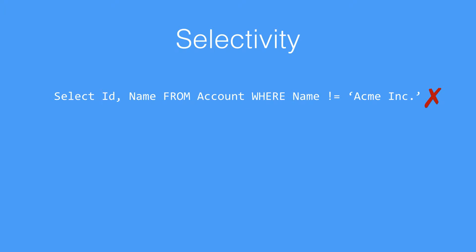On the other hand, if we were to do the query where we select the ID and the name where we're using the ID within a particular set of IDs, that is a selective query. This is because, again, it's an index field that we're working with — the ID is also a standard index field. Because we're finding it within a certain range, it means we can go through and select a certain number of records.